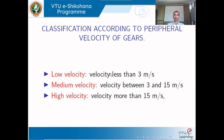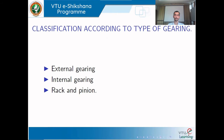Classification by peripheral velocity gives three categories: low velocity gears used up to 3 meters per second, medium velocity gears used between 3 to 15 meters per second, and high velocity gears used above 15 meters per second.